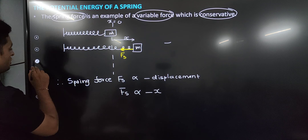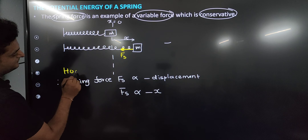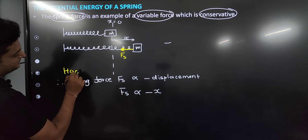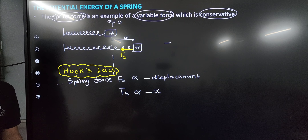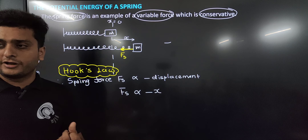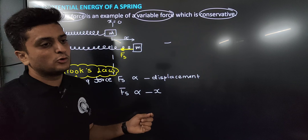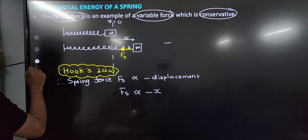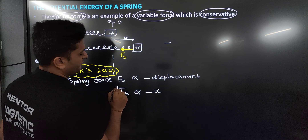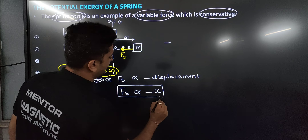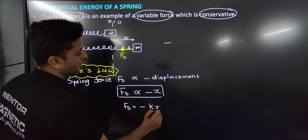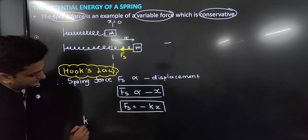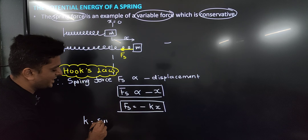This is called Hooke's Law. Hooke's Law states that the restoring force produced in a spring is directly proportional to the displacement and acts in the opposite direction. The mathematical form is F = -kx, where k is called the spring constant. Removing the proportionality sign gives us Fs = -kx.